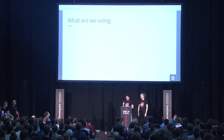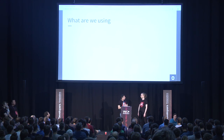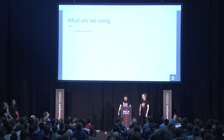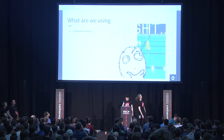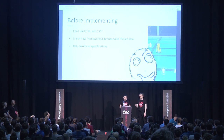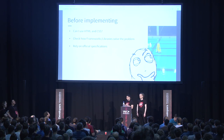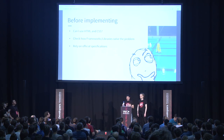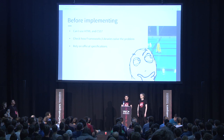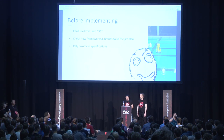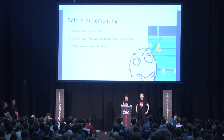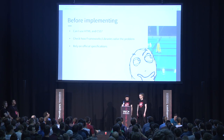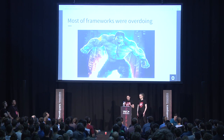We can tell you what we use and how we make our decisions according to our requirements. There is something we tend to refer to most of the time during our development process — common sense. Before implementing something, we first check if we can solve the problem with plain HTML and CSS. We check how frameworks and libraries solve specific problems, but regardless of framework implementation details, we rely on official specifications for implementation.